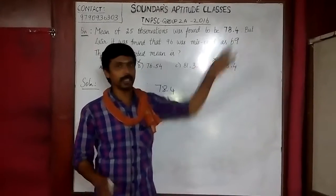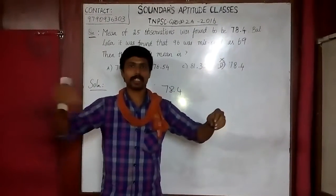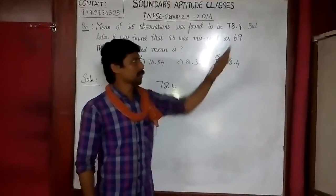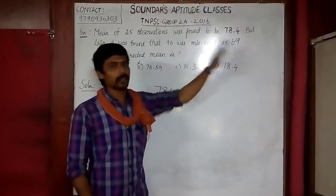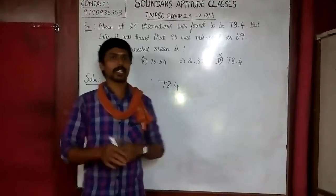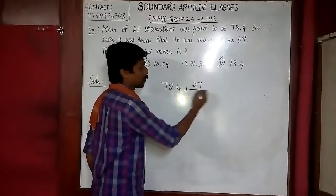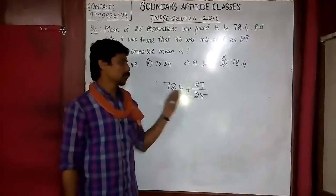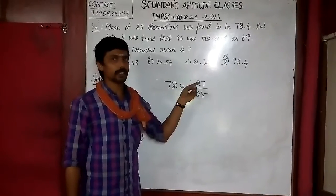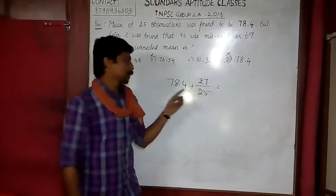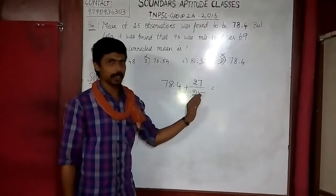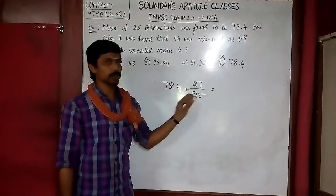If we take 25 numbers, the current mean is 78.4. The value increases by 27. Dividing the increase of 27 by 25 gives 1.08. So the corrected answer is the existing average plus the increased value divided by the count, which gives approximately 79.48.